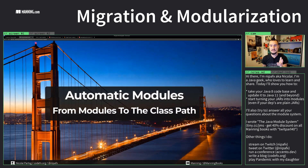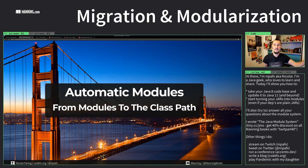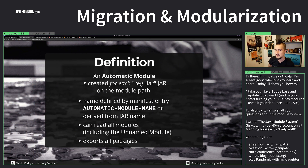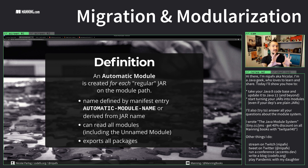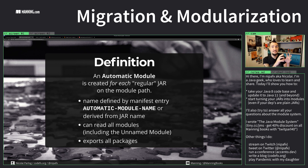This is where automatic modules come in — they are a bridge from proper modules to the class path. You can take plain old jars with no module-info class and put them onto the module path. If you do that, each of them gets turned into an automatic module. That's important: all the jars on the class path end up in one unnamed module, but each plain jar on the module path gets turned into a single automatic module.